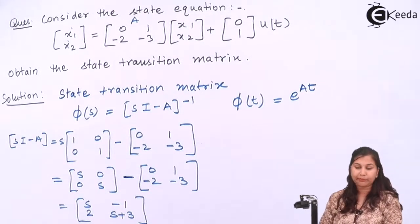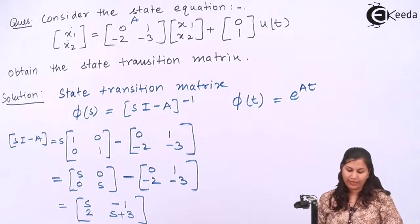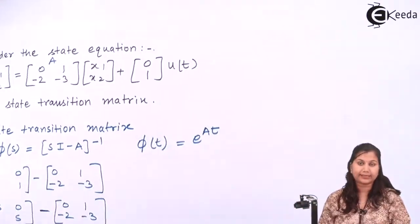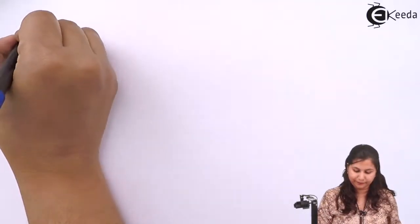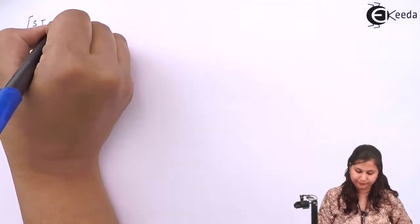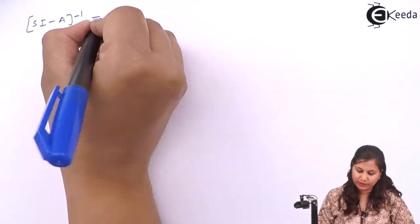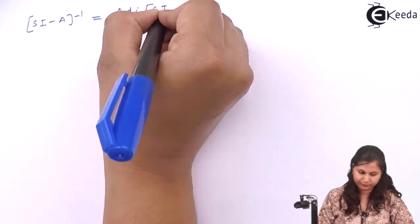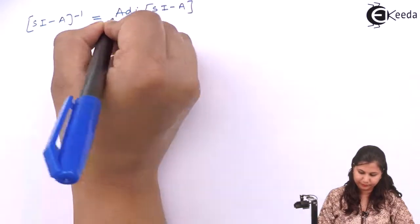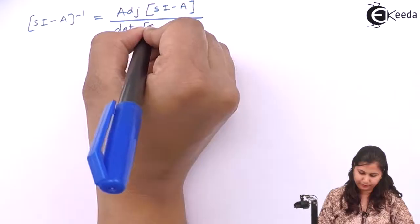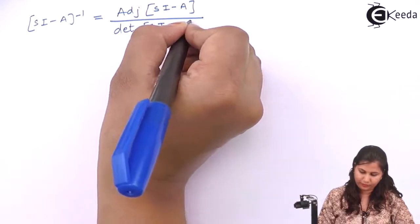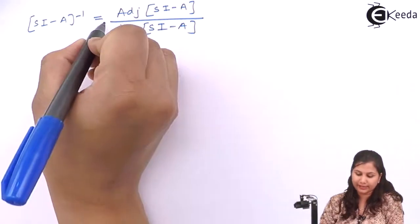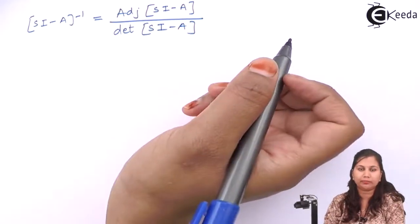Now we have to calculate (sI - A) inverse. The inverse of a matrix is calculated as the adjoint of the matrix divided by the determinant of the matrix.